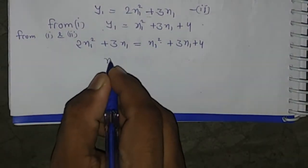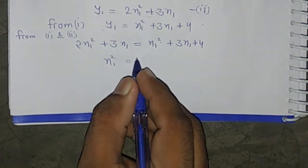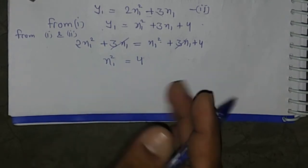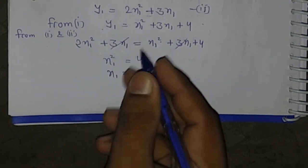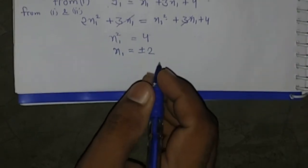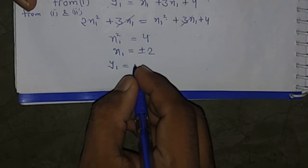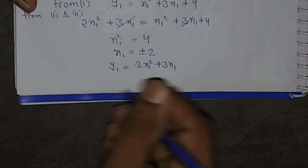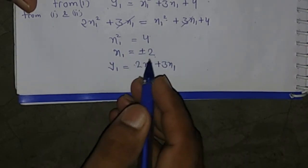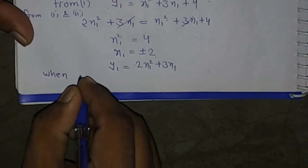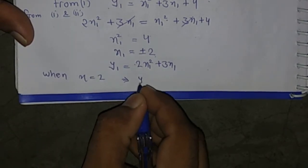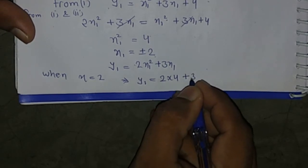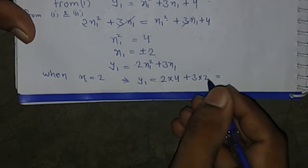Solving, x₁² = 4, so x₁ = ±2. Now using y₁ = 2x₁² + 3x₁: when x₁ = 2, y₁ = 2(4) + 3(2) = 8 + 6 = 14.